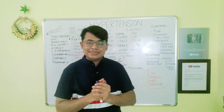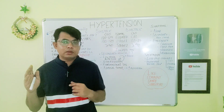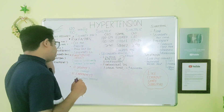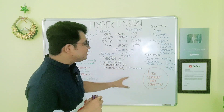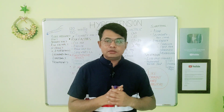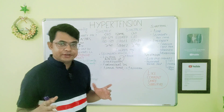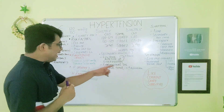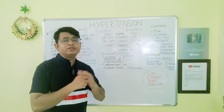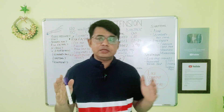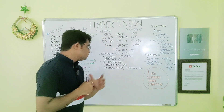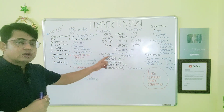Fibromuscular dysplasia is a condition which can lead to development of hypertension. Adrenal tumors secreting aldosterone hormone — if there is an adrenal tumor secreting excess aldosterone — can also lead to accumulation of fluid within the vascular compartment, leading to development of hypertension. These are the common causes of secondary hypertension.